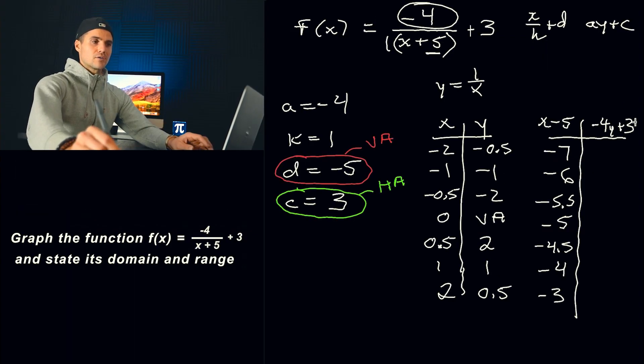And then taking all these y values and putting them through this formula, negative 4y plus 3. So that would be what? 5. 4 plus 3 is 7. That would be 11. Now this VA just stays as a VA. I'll talk about that in a sec. Negative 4 times 2 is negative 8 plus 3 is negative 5, negative 1. And then negative 4 times 0.5 is negative 2 plus 3, which gives us positive 1, like that.